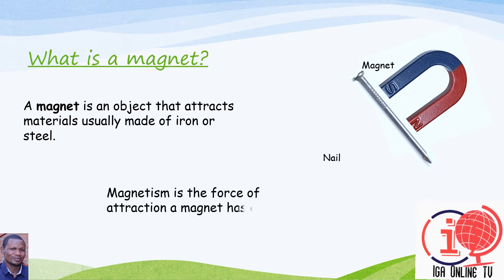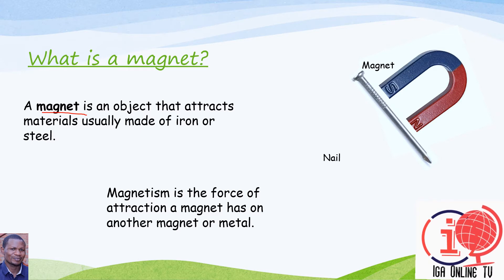What is magnetism? Magnetism is the force of attraction a magnet has on another magnet or a metal. This magnet has a force of attraction that makes it able to attract a nail. That force of attraction is called magnetism. A magnet, as we said before, is an object that attracts materials usually made of iron or steel.